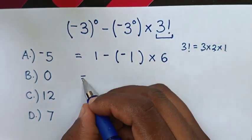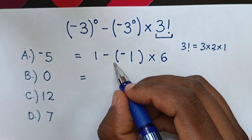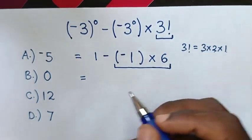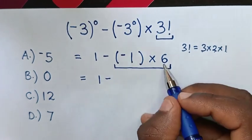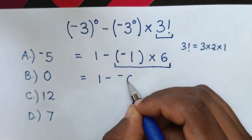Then, our expression will be equal to, next step, we will deal with this multiplication. So, it will be 1 minus negative 1 times 6 is negative 6.